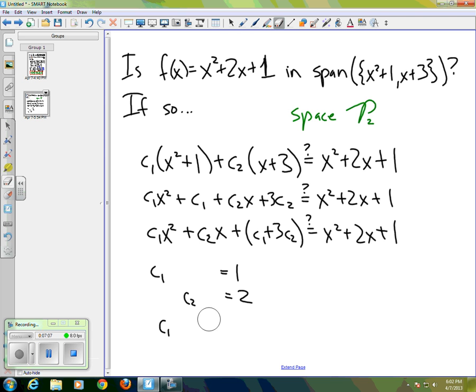And c2, let's see. We have three constants there, so let me leave room for all of them. So c1 equals 1. c2 equals 2. And then c1 plus 3c2. Ah, I was wrong. We only have two constants. Let me rewrite that. So we've got c1 equals 1, c2 equals 2.